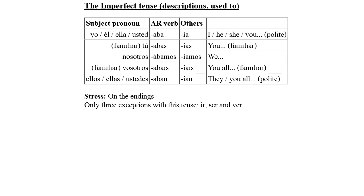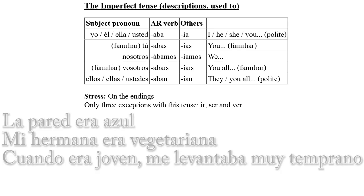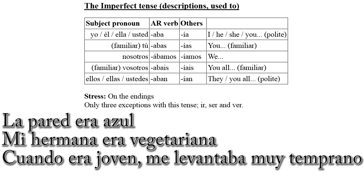DESCENDER can mean to go down or to come down. It is not an AR verb, so I will use the other endings. To say 'I was going down the stairs,' I can say DESCENDÍA LAS ESCALERAS. This form is also the same for the EL/ELLA/USTED form. The other forms are DESCENDÍAS, DESCENDÍAMOS, and DESCENDÍAN. For the VOSOTROS form, I can change DESCENDÍAMOS to DESCENDÍAIS. Some examples: La pared era azul — the wall was blue; as I am describing the state of the wall in the past, it does not mean it is still blue. Mi hermana era vegetariana — my sister was vegetarian. Cuando era joven — when I was young — me levantaba muy temprano: I used to get up very early.